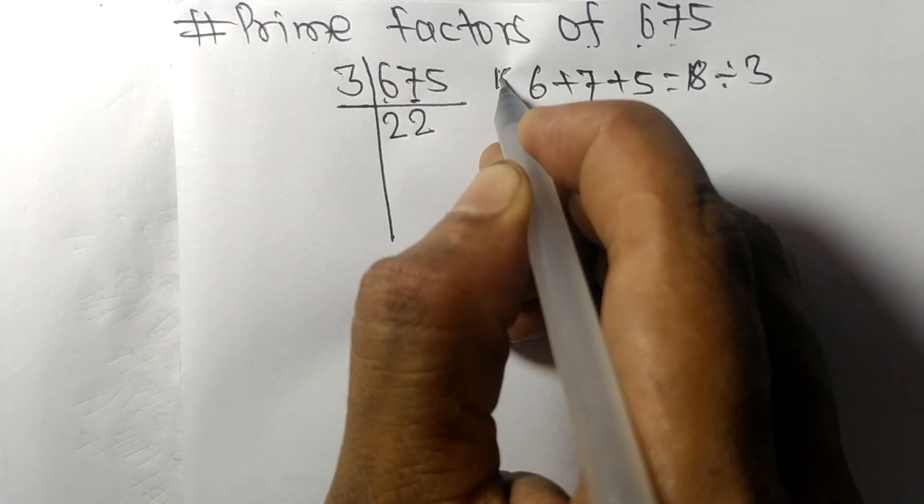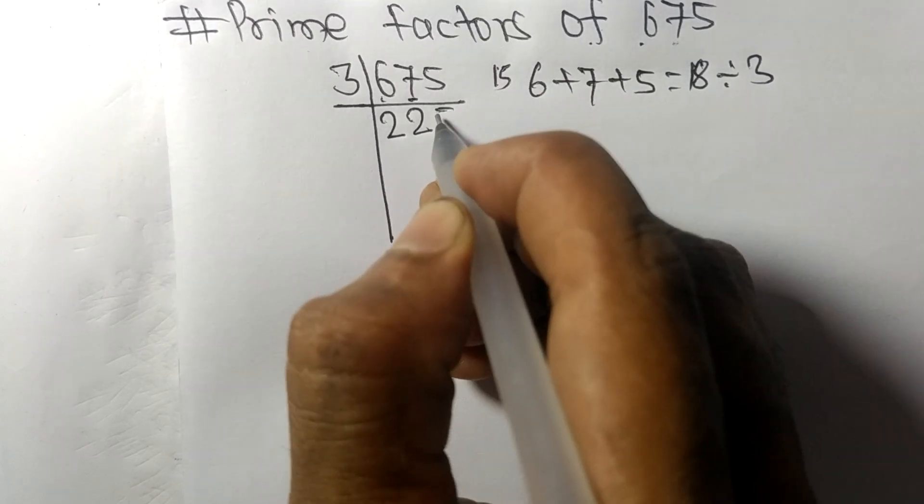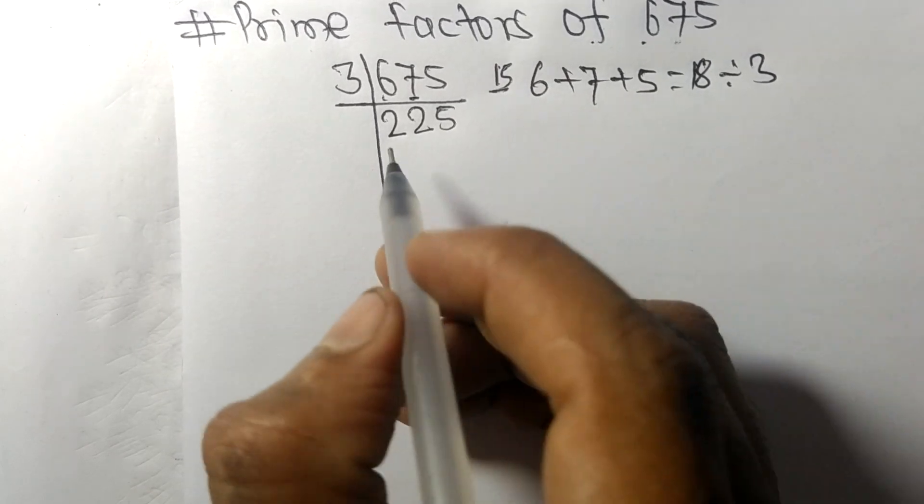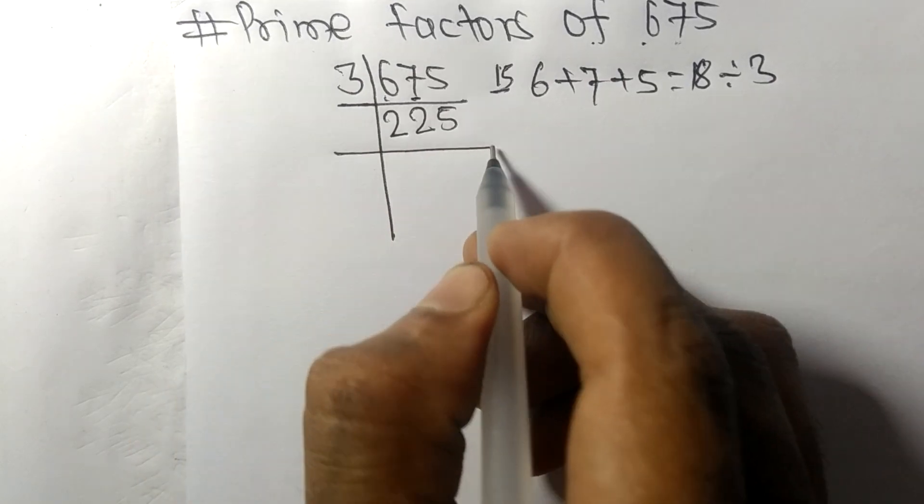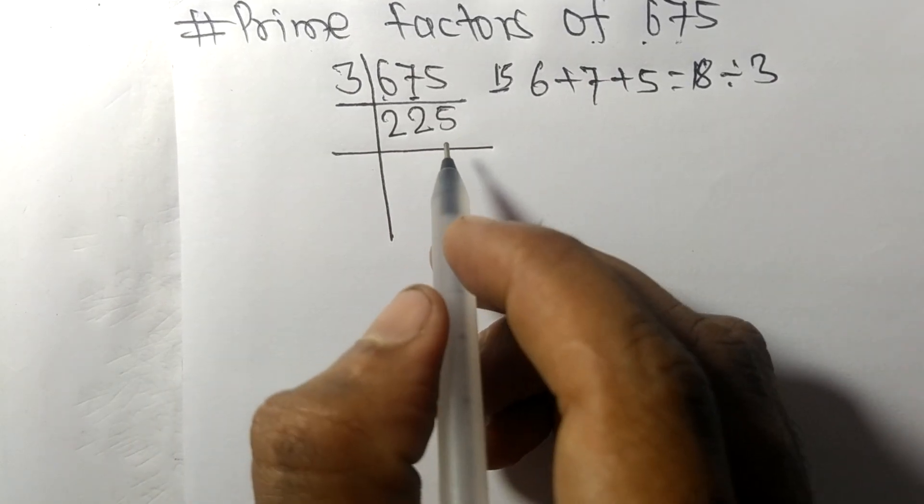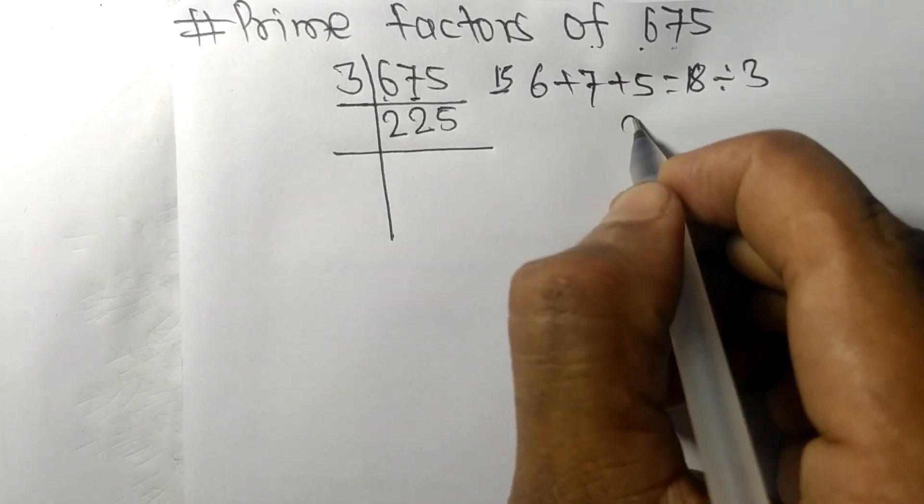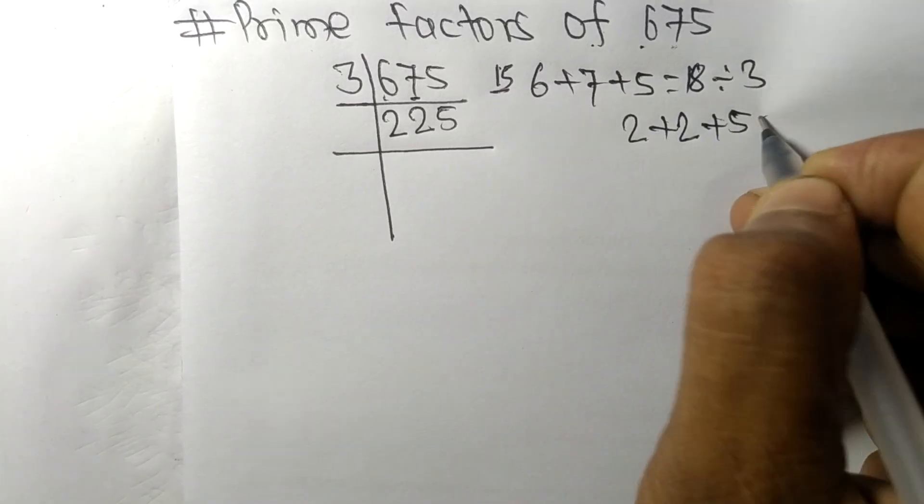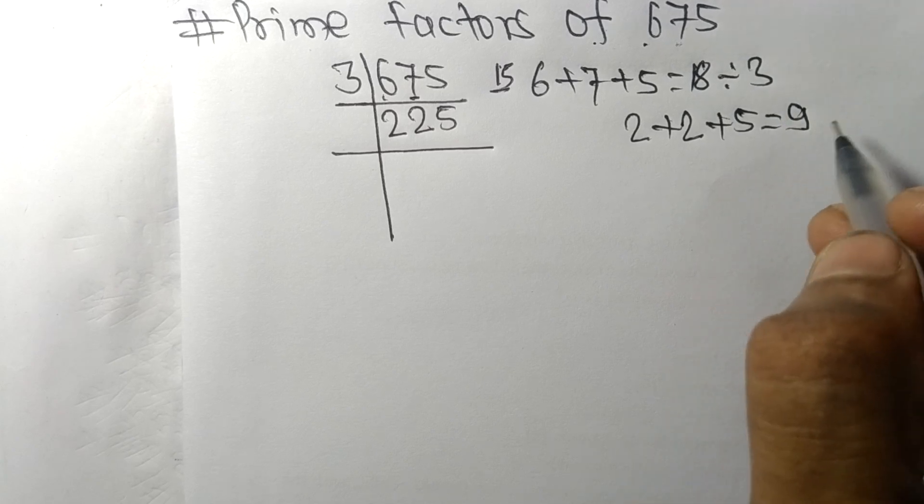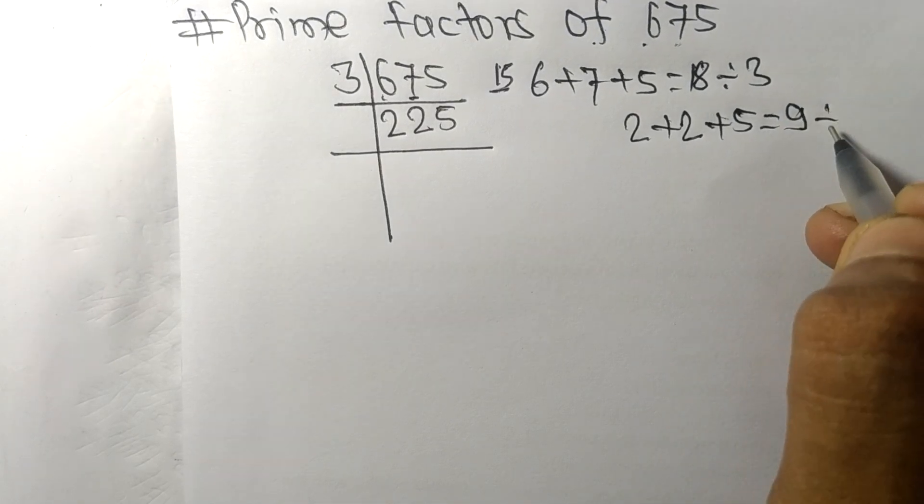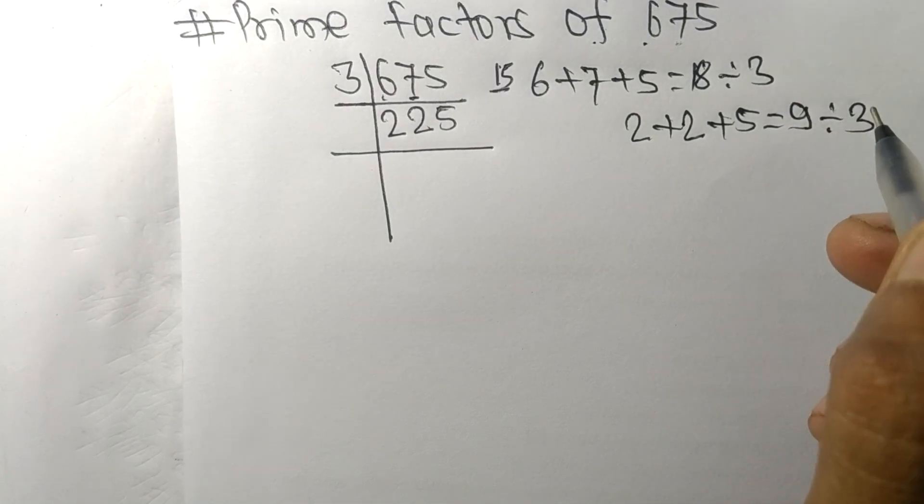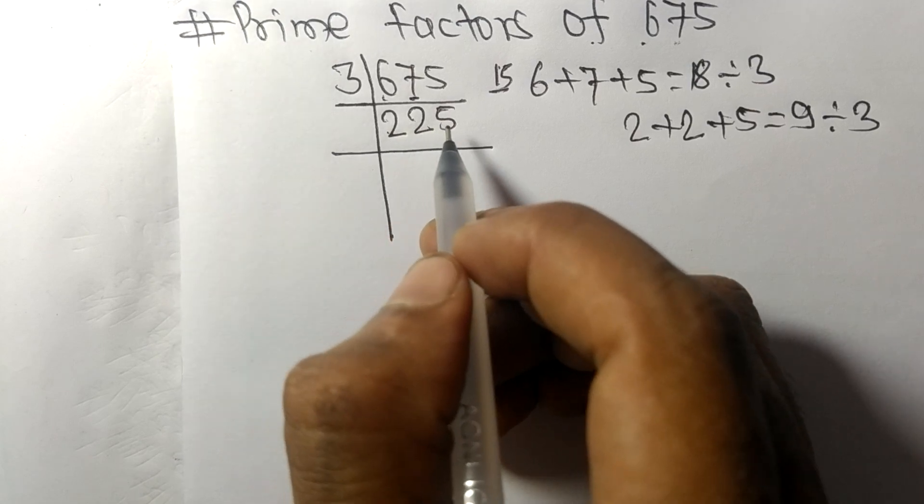Now we have 225. When we add all these digits, 2 + 2 + 5, we get 9, and 9 is exactly divisible by 3, so 225 is also divisible by 3.